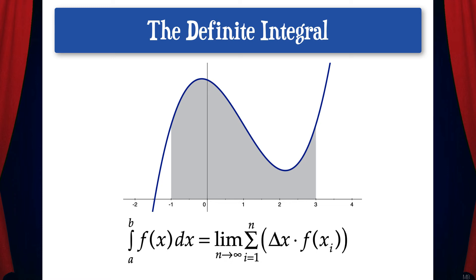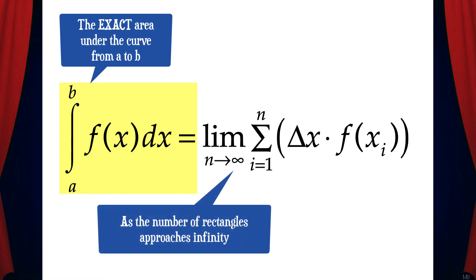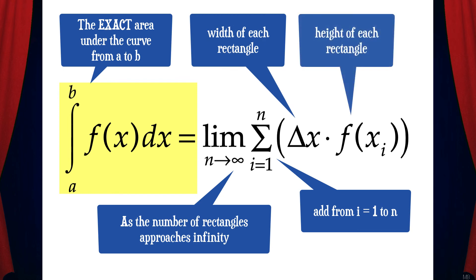Let's break this down to make sure we're super clear on what this notation means. The integral from a to b of f of x dx represents the exact area under the curve from a to b. Then we have the limit, which means as the number of rectangles approaches infinity. Then we have the sigma sign, which means add from i equals 1 to n delta x times f of x sub i, where delta x is the width of each rectangle and f of x sub i is the height of each rectangle. So we're adding the areas of all the rectangles from i equals 1 to n. But since we're letting n approach infinity, this means that we're adding the areas of an infinite amount of rectangles, and that will give us the exact area under the curve from a to b.